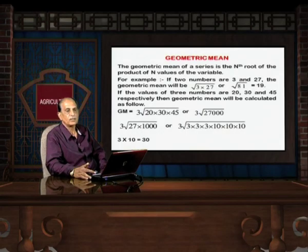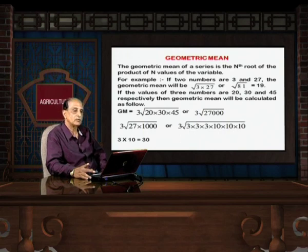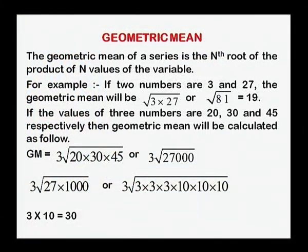Hello friends, we have discussed so far how to determine mode in respect of continuous series. Now we discuss what is geometric mean. Geometric mean of a series is the nth root of the product of n values of the variables. For example, if two numbers are 3 and 27, the geometric mean will be the square root of (3 × 27) = √81 = 9. So 9 is the geometric mean of the two values 3 and 27.